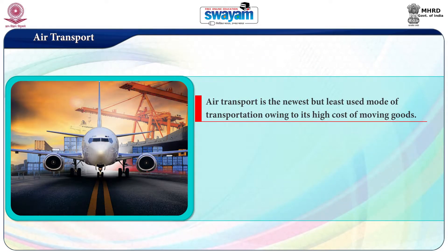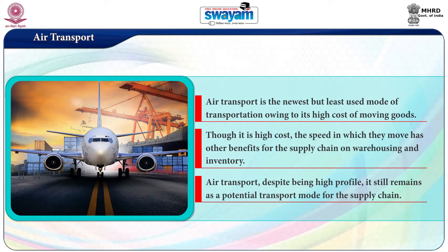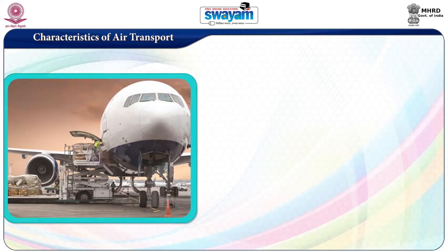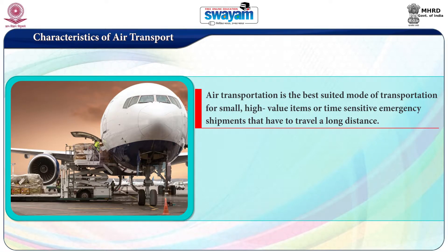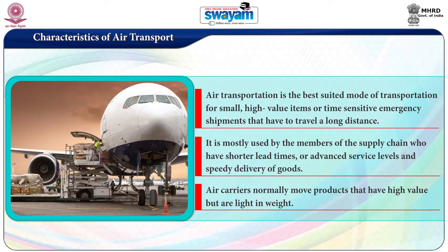Air transport: air transport is the newest but least used mode of transportation owing to its high cost of moving goods. Though it is high cost, the speed at which goods move has other benefits for the supply chain in terms of warehousing and inventory. Air transport, despite being high cost, still remains a potential transport mode for the supply chain. Air transport is the best suited mode of transportation for small high-value items or time-sensitive emergency shipments that have to travel a long distance in a shorter time. It is mostly used by supply chain members who require shorter lead times, advanced service levels, and speedy delivery. Air carriers move products that have high value but are light in weight.